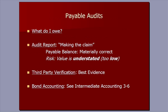Flipping to payables — payables are about what the company owes. The audit report claim is again that it's materially correct, meaning a statement reader would be looking at information that would not change materially even if we counted every single dollar. The risk with a liability is that we understate them — that they're too low. We want to avoid understating payables. Third-party information is again our best evidence.